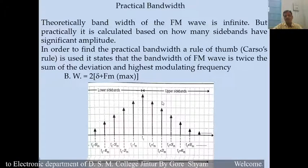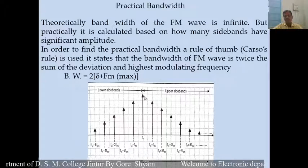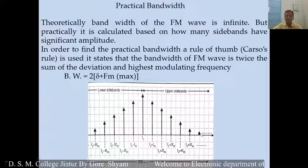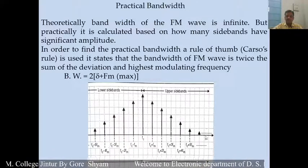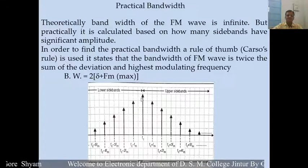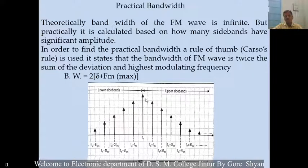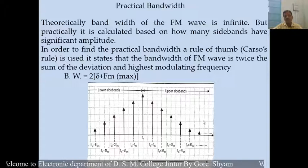Looking at the spectrum, these are the side bands on the left-hand side of the carrier wave, and on the right-hand side there are also a number of side bands. The amplitude of those side bands decreases as we move away from the carrier wave. The carrier wave has the maximum amplitude. This is the frequency spectrum of the frequency modulated carrier wave.